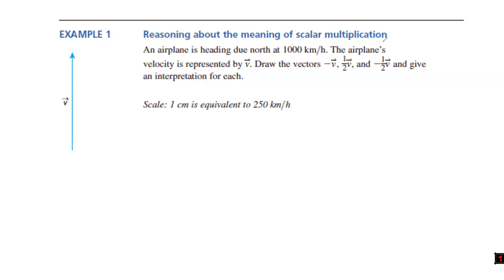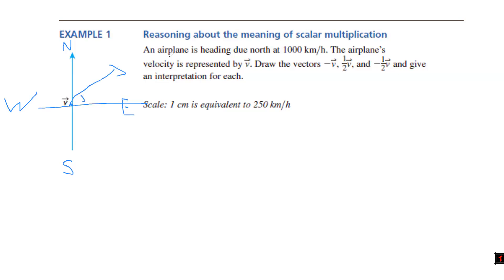Let me solve this for you. An airplane heading due north means the vector is represented upwards. North is up, south is down, east is right, west is left. This representation is useful because using a compass we can define direction easily — for example, 'north 45 degrees due east,' or 'heading south towards west.'